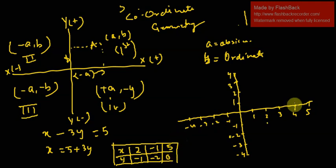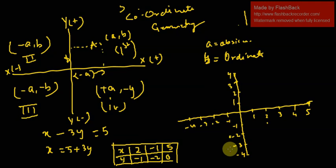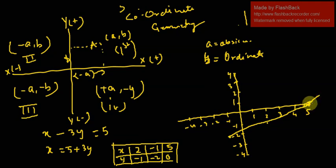The third point is (5, 0): the value of y is 0, which means it lies on the x-axis, and x is 5. So this point is where y is 0 and x is 5. Joining these three points, the line will cut the x-axis at 5. This is the representation of the line on graph paper.